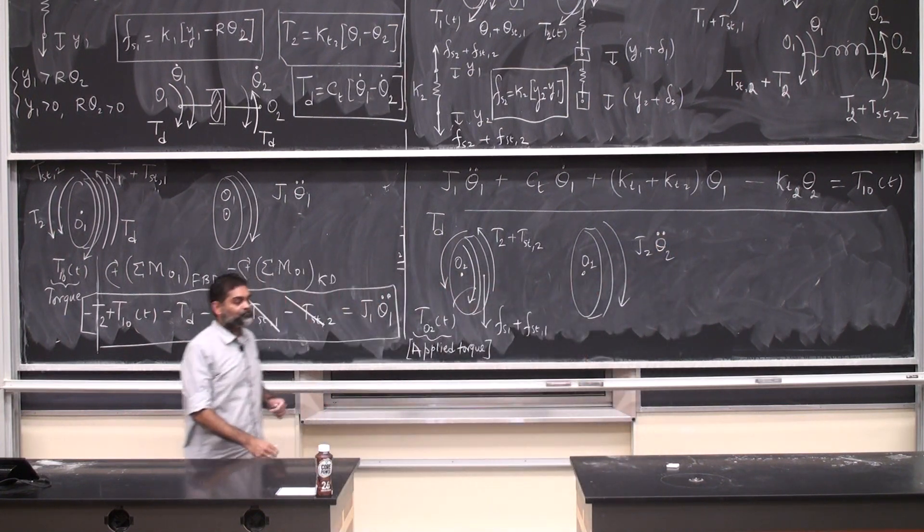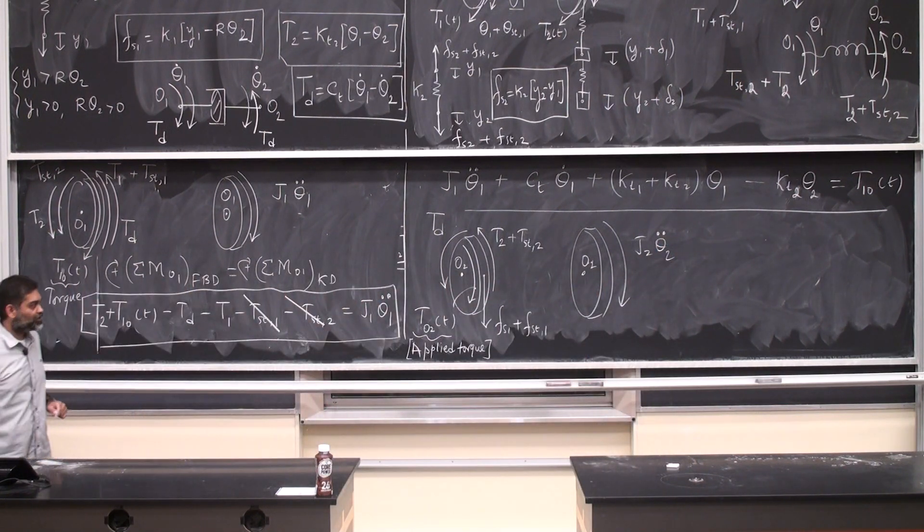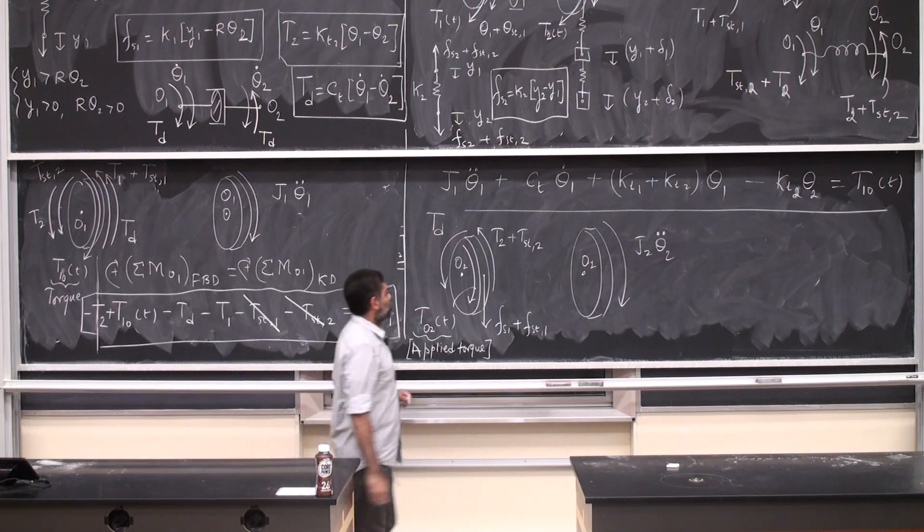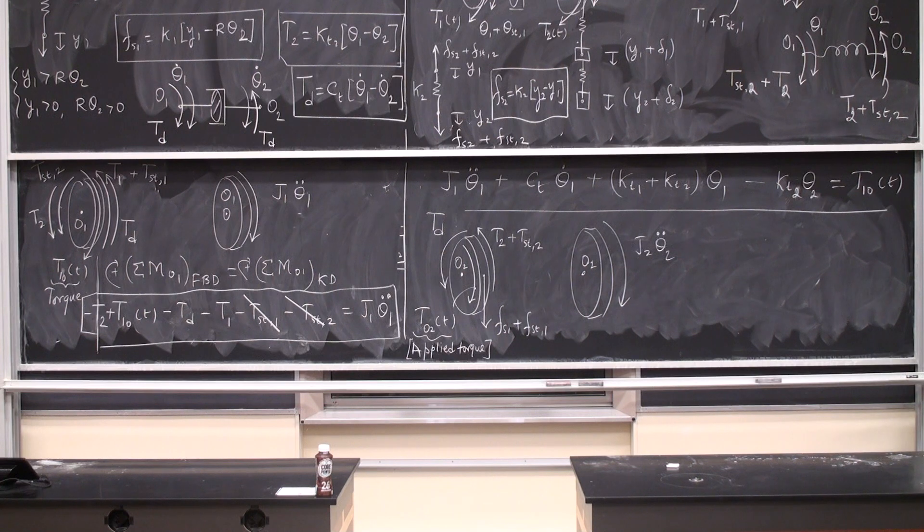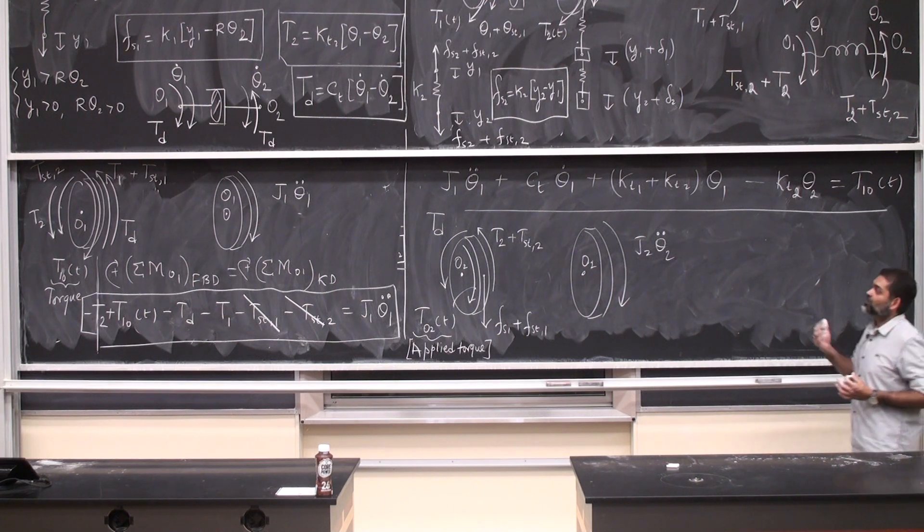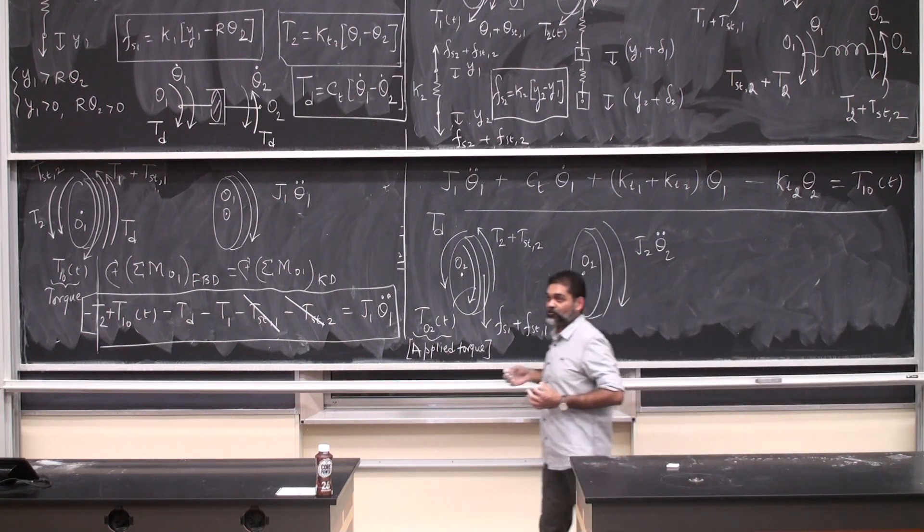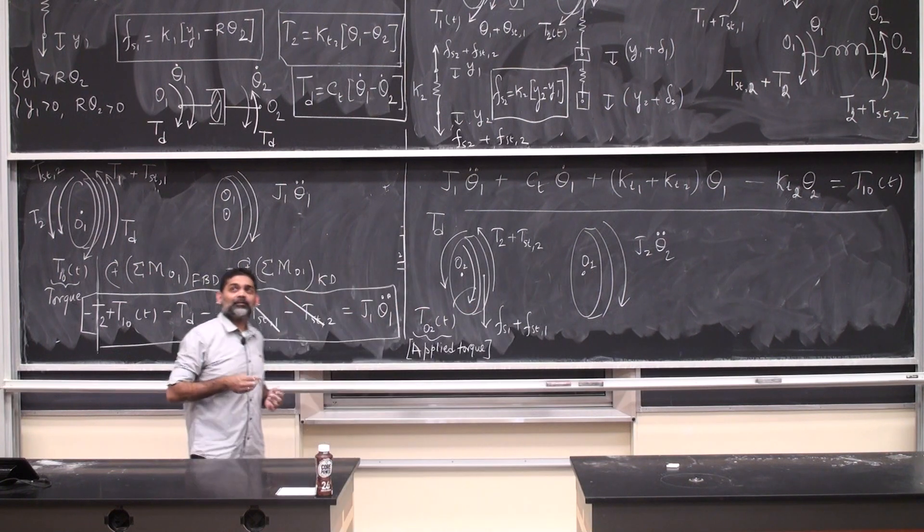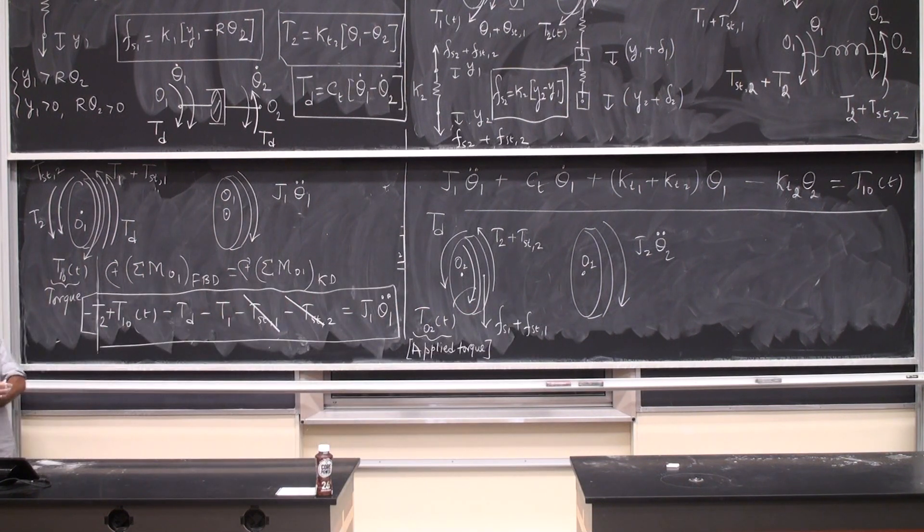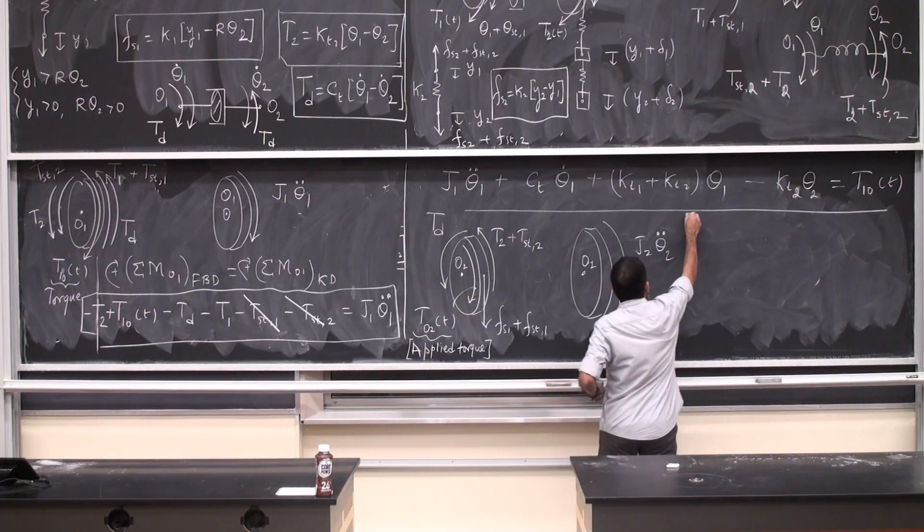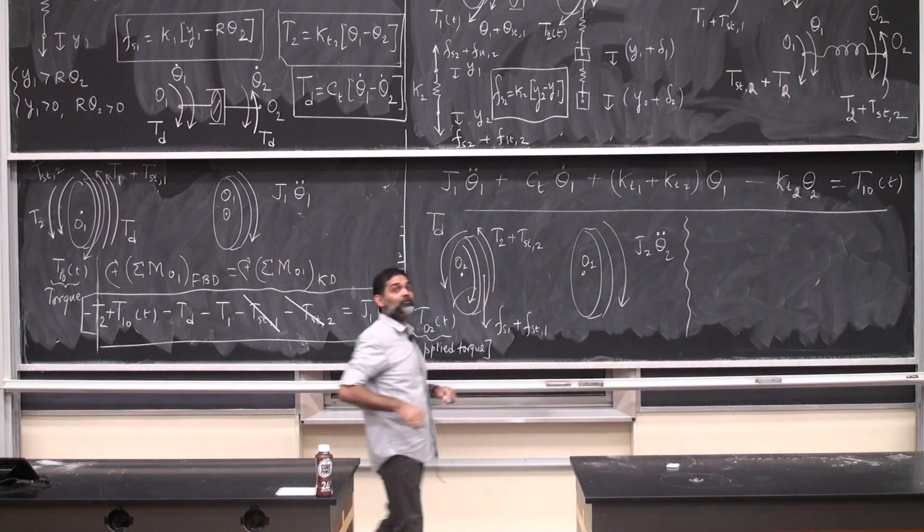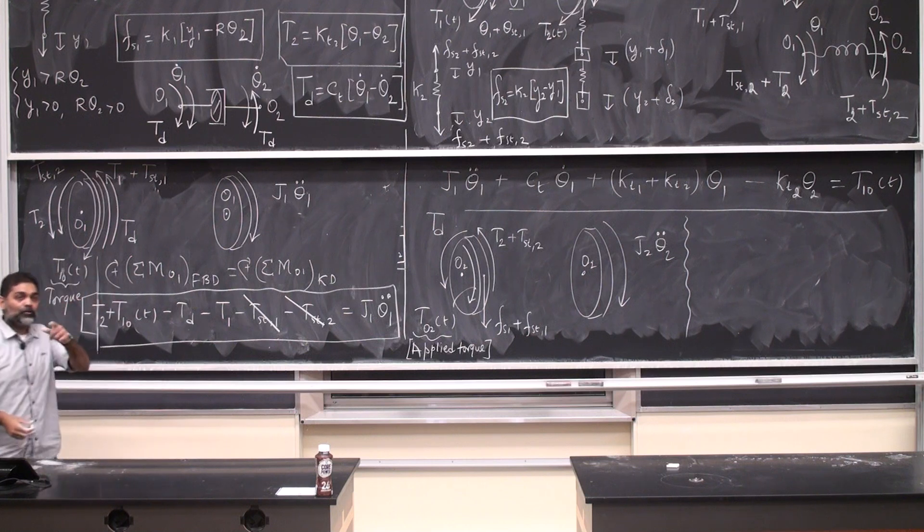And right here, J2 theta 2 double dot. Free body diagram, kinetic diagram. The hope is the contribution of this f static 1 will cancel off with the static torque from the torsional spring, which is what we had derived at the beginning, for ACP. See, if I write out the equations. Bear with me while I complete this problem. Hang on.